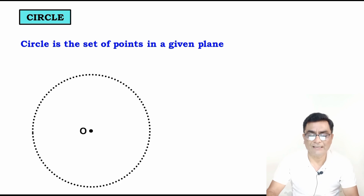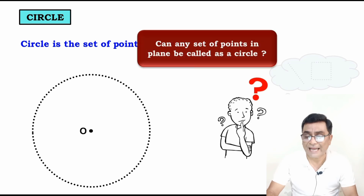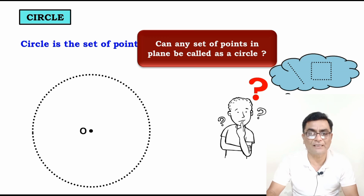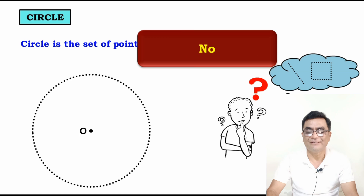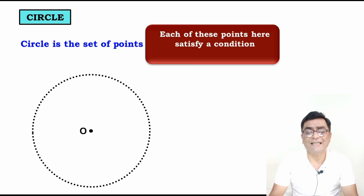These are points in a plane, and that set of points forms a circle. Can any set of points in a plane be called a circle? The answer is no. Why no?